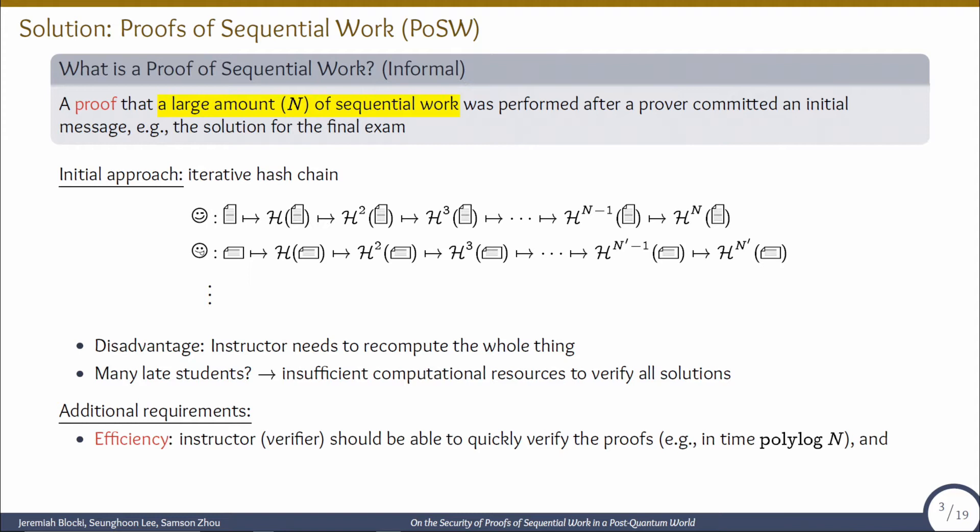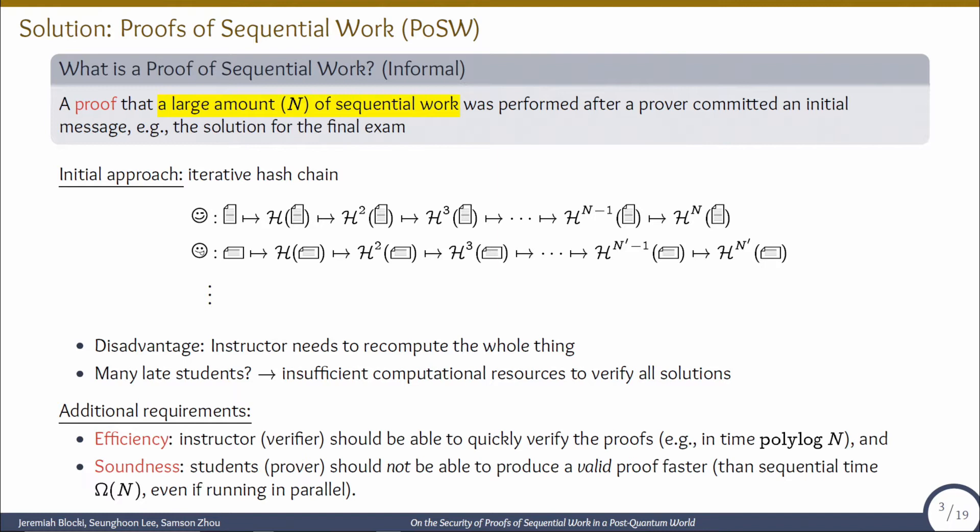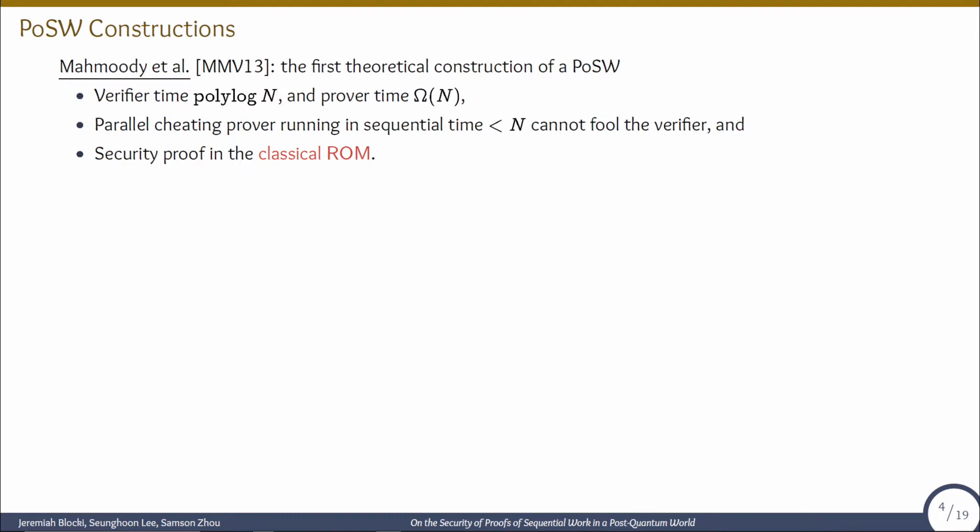Therefore, we need additional requirements for proofs of sequential work. First, efficiency: instructors should be able to quickly verify all the proofs in time polylog n. And second, soundness: students should not be able to produce a valid proof faster than sequential time omega n, even if running in parallel.